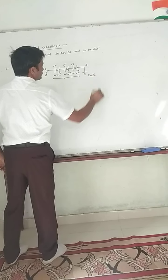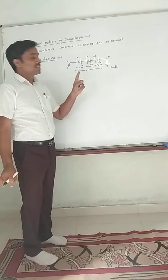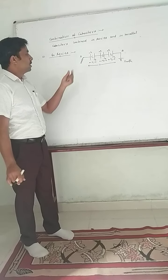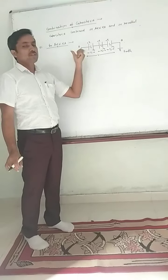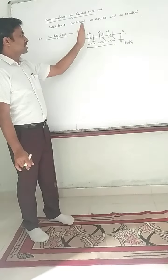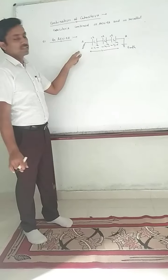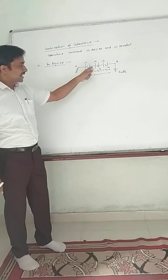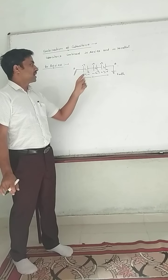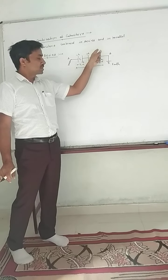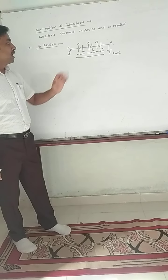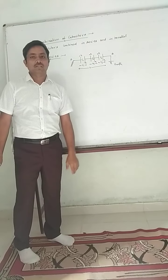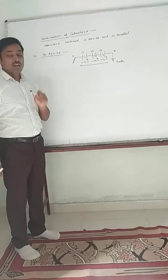Three capacitors C1, C2, C3 are added in series. The first plate of the first capacitor is connected to the electric source. The second capacitor follows, then the third capacitor. The last plate connects to the circuit. Charge flows through the series combination.